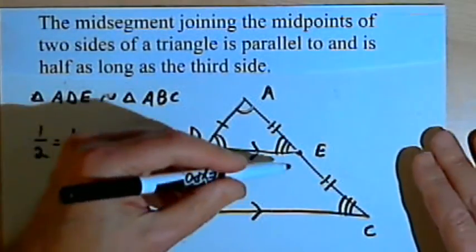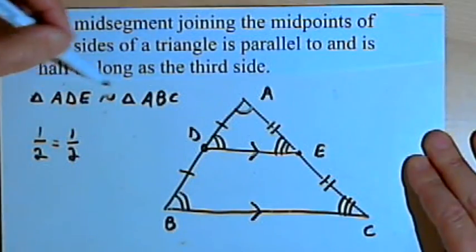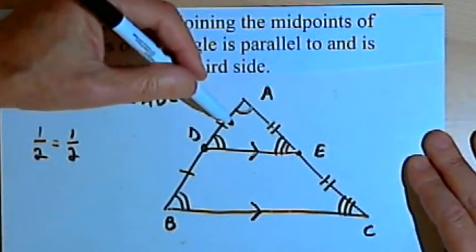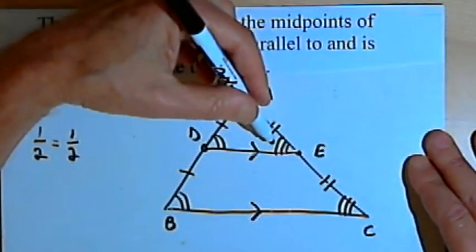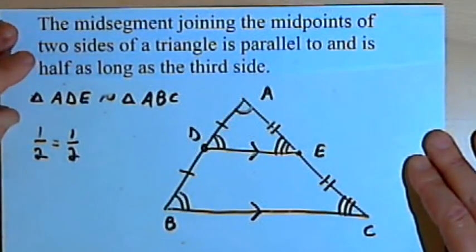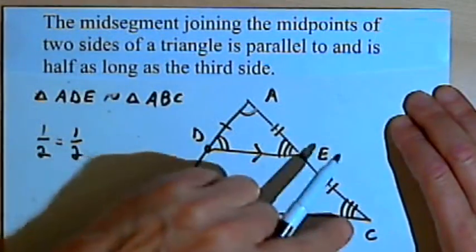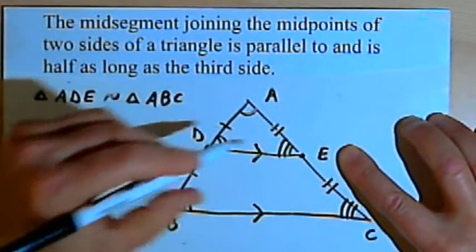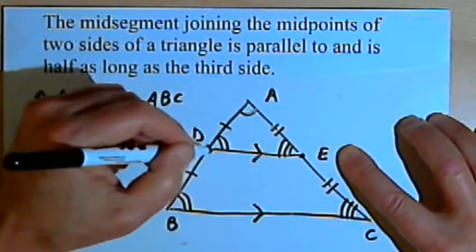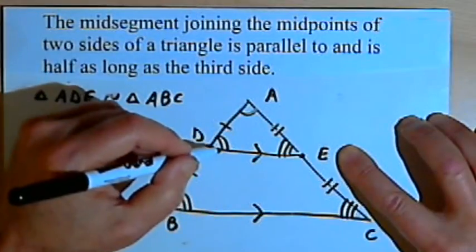The theorem also said that DE was going to be half as long as BC. That makes sense because the ratio of triangle ADE to triangle ABC — the ratio for all the sides, the proportion — was 1 over 2. So DE must be half as long as BC. So that's the mid-segment theorem. Once again, what it says is this: if you've got a triangle and you've got two sides with midpoints, and you connect those midpoints, the mid-segment you've just made is going to be parallel to the third side and it will be half as long as the third side.